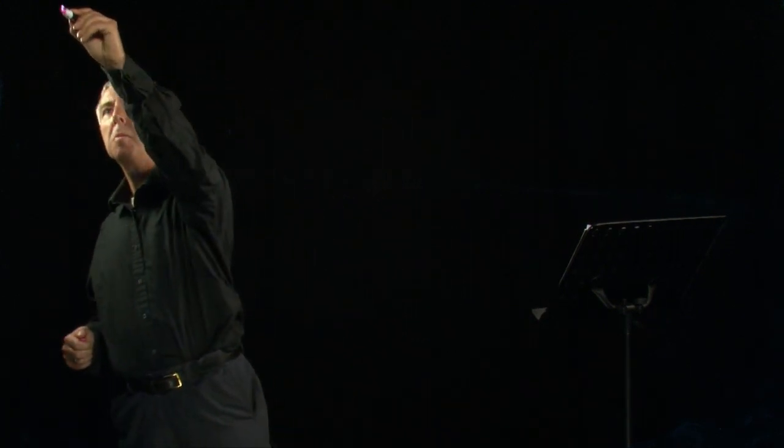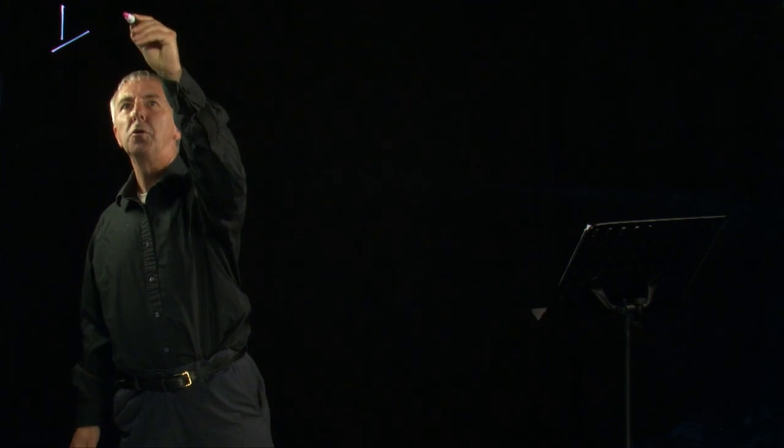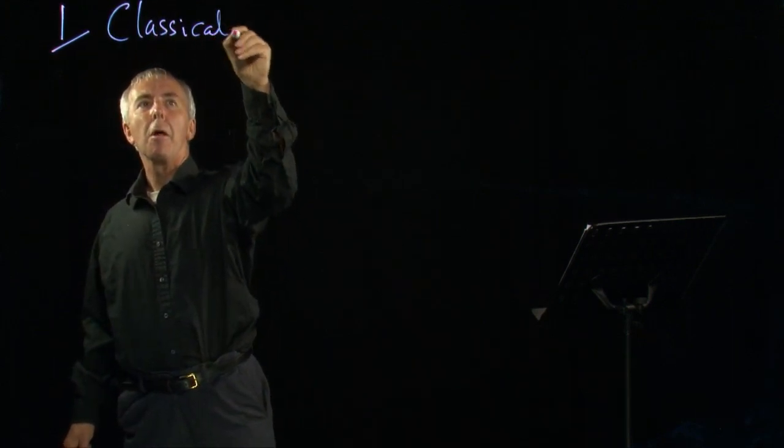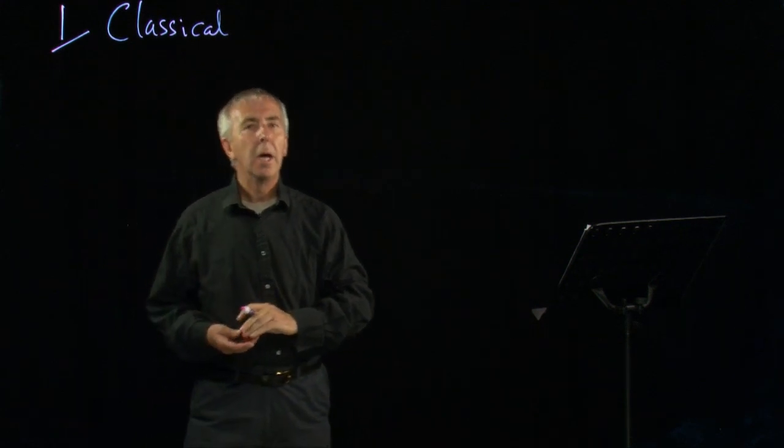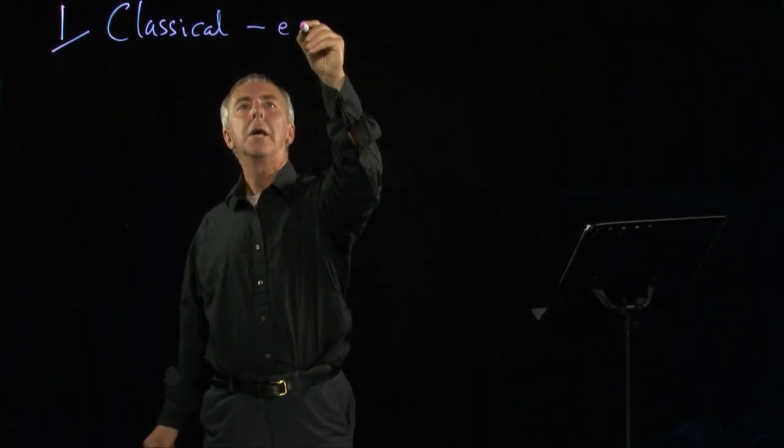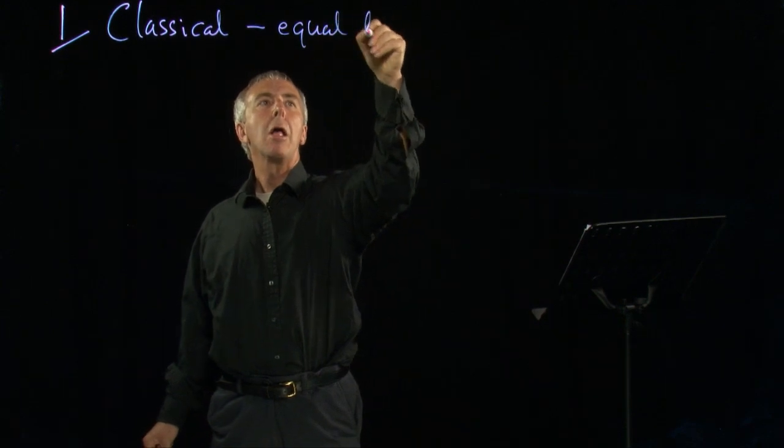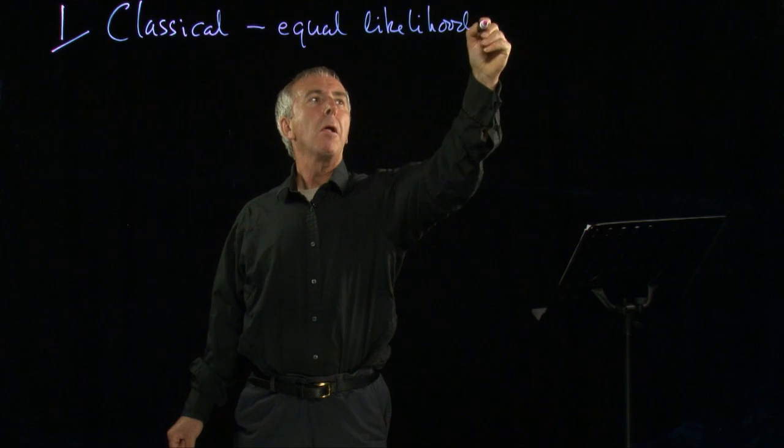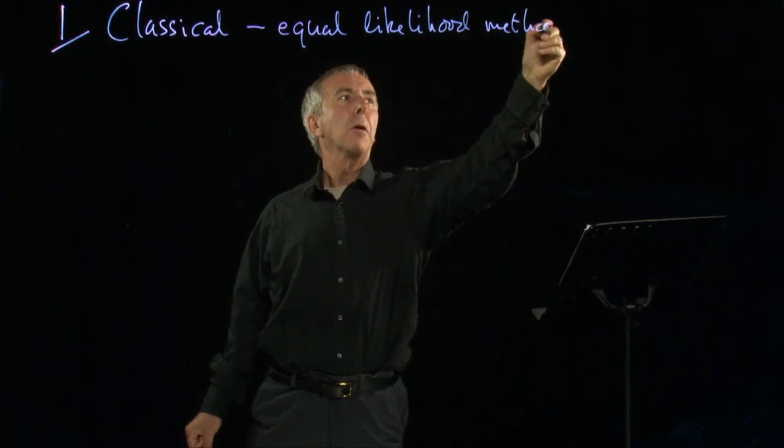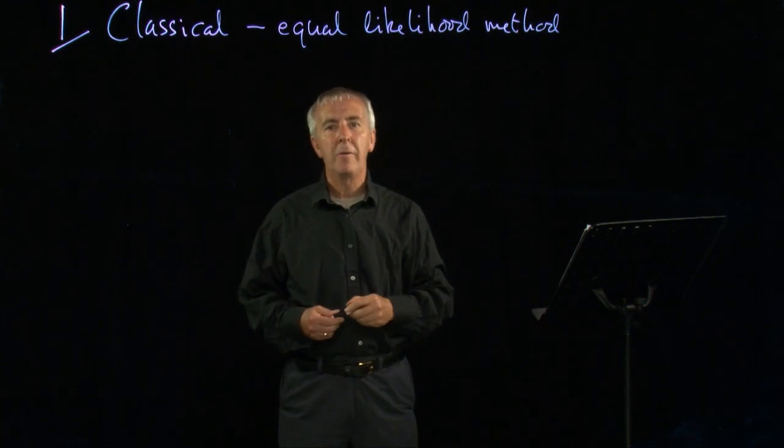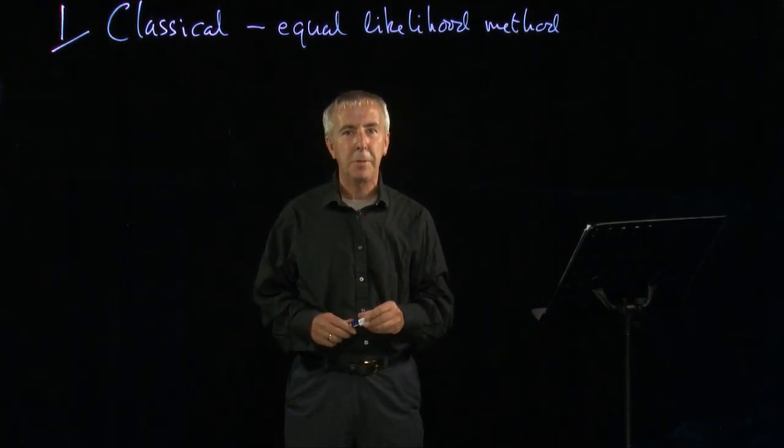The first one is what's called the classical definition, and this is also sometimes called the equal likelihood method. This applies when you are doing an experiment with a number of outcomes, and they've all got the same chance of happening.